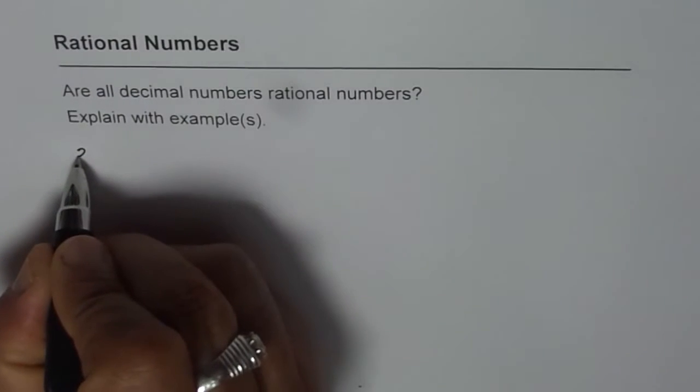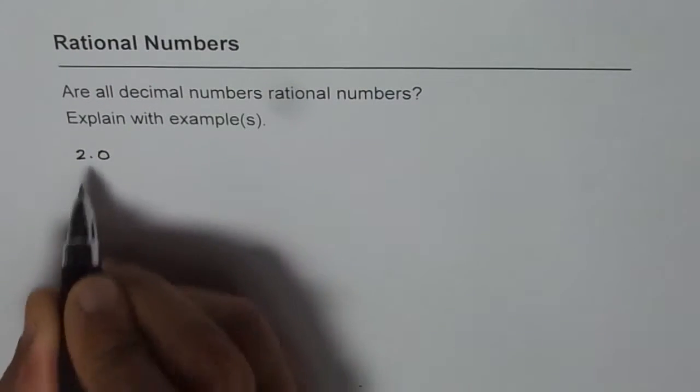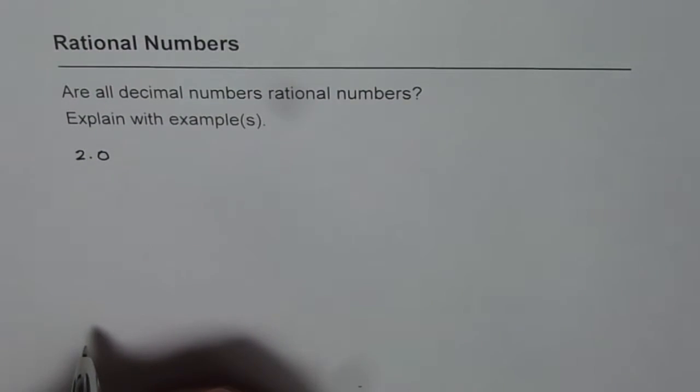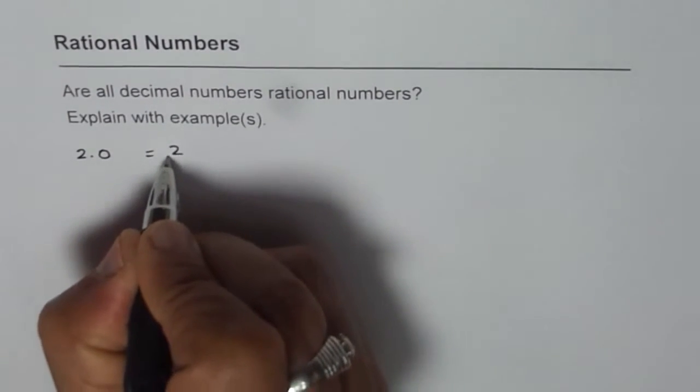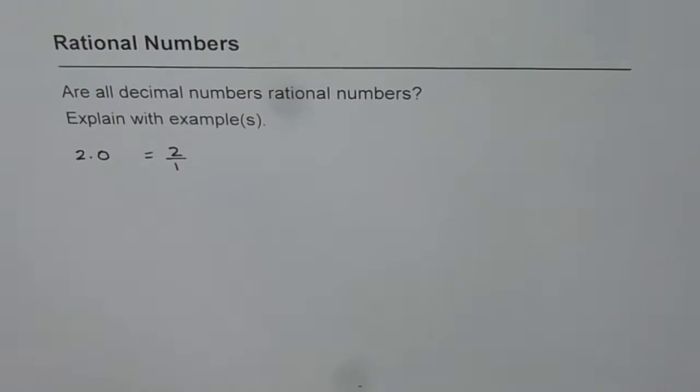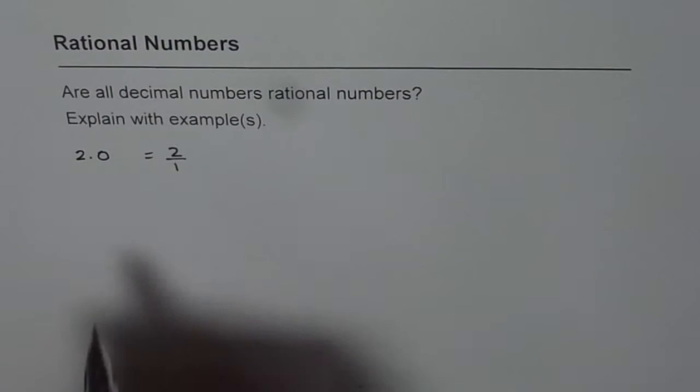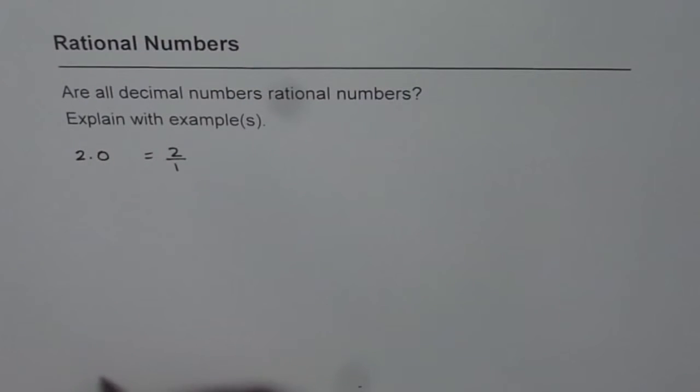Let's say if I write a number 2.0, it's a decimal number, yes, but it can be written as 2 over 1. So you can write it as an integer divided by another integer. So it is a rational number and you're dividing by a number which is not 0.